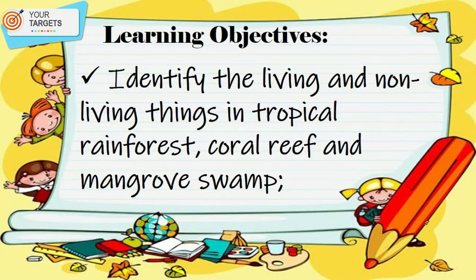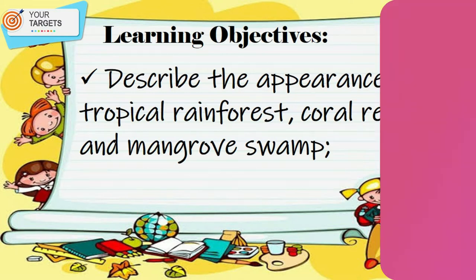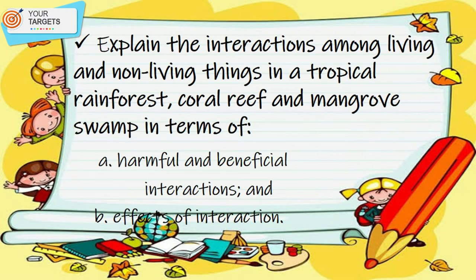Here are our goals for today's lesson. First, identify the living and non-living things in tropical rainforest, coral reef, and mangrove swamps. Second, describe the appearance of tropical rainforest, coral reef, and mangrove swamps. Third, explain the interactions among living and non-living things in a tropical rainforest, coral reef, and mangrove swamp in terms of harmful and beneficial interactions and effects of interaction.